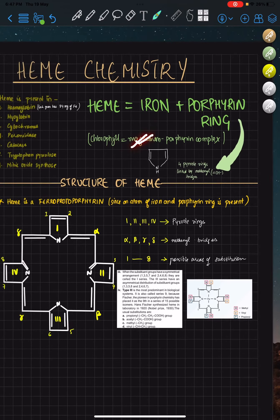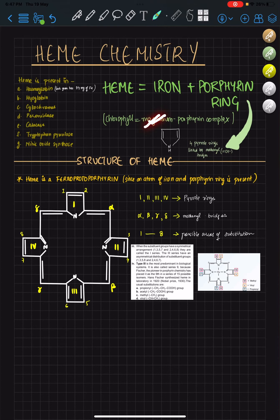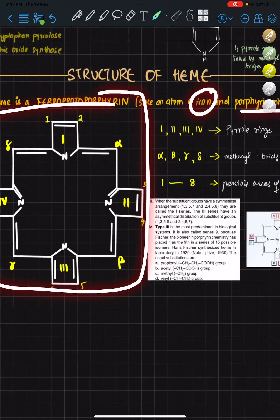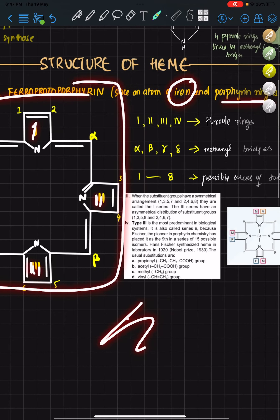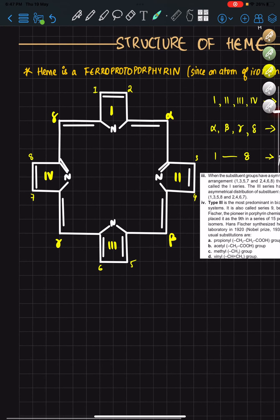So heme, as I said, is a ferroprotoporphyrin—that's because it has an atom of iron and a porphyrin ring. This is actually the porphyrin ring you see here. In the Roman numerals I, II, III, and IV, you see the four pyrrole rings.